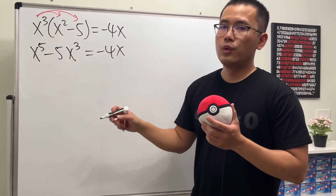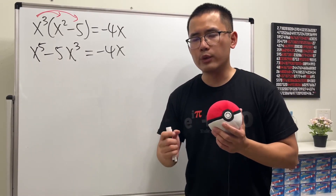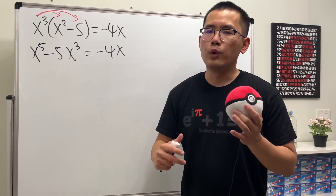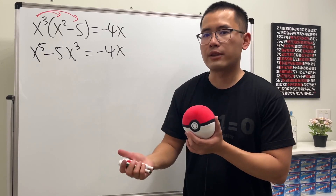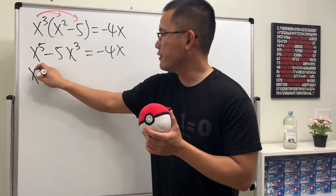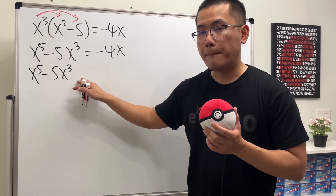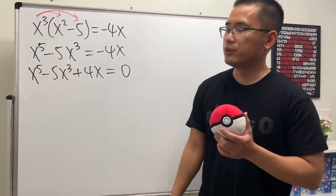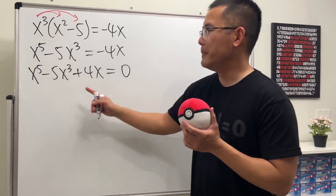That will be equal to negative 4x. To solve this kind of equation, let's make one side equal to zero, because usually when we have a polynomial equation we want one side equal to zero and then try to factor the other side if it's factorable. So we move this over and we have x to the fifth power minus 5x to the third power plus 4x equals zero.